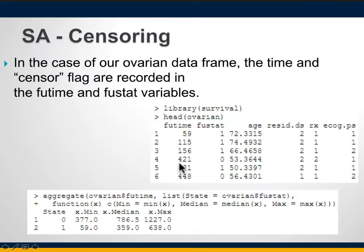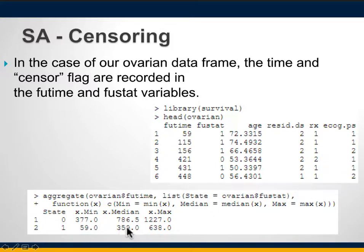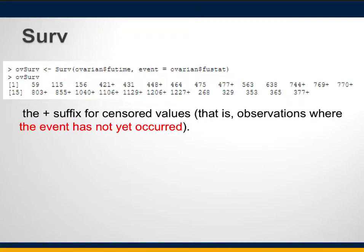This censoring status is recorded in the fustat variable. Running aggregates shows that censored observations have state zero, and when state is one the median survival time is 359 days. To use survival analysis, the first step is creating an object that combines the variables of interest into a survival function. The survival function is essentially a plot.